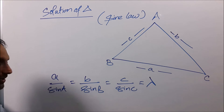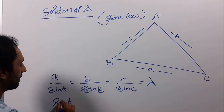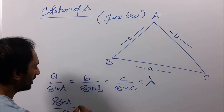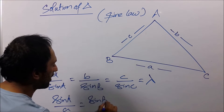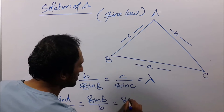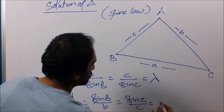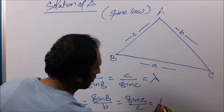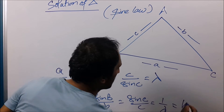Many authors also write sin A upon a equals sin B upon b equals sin C upon c, and this is just the reciprocal — we can take one by lambda.